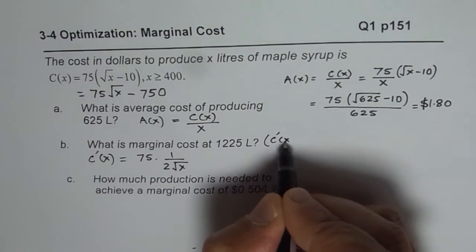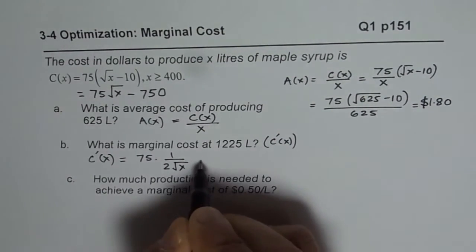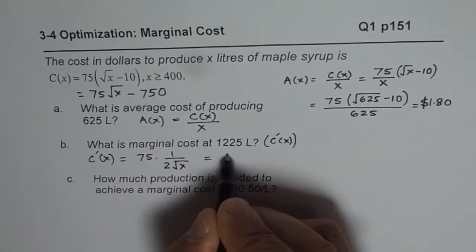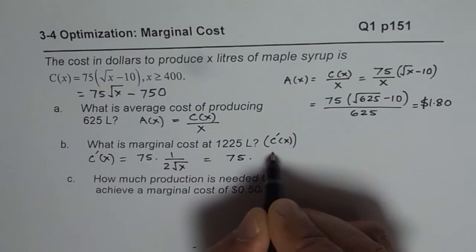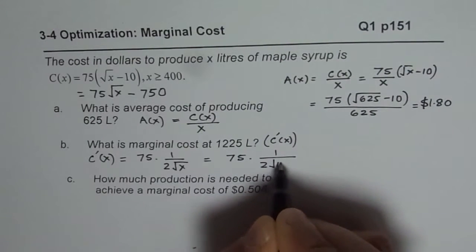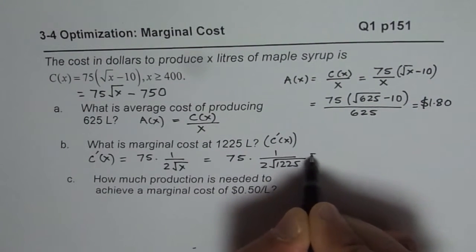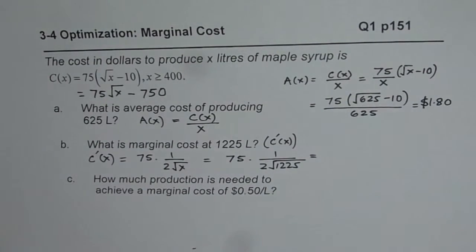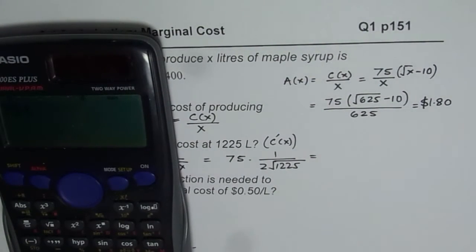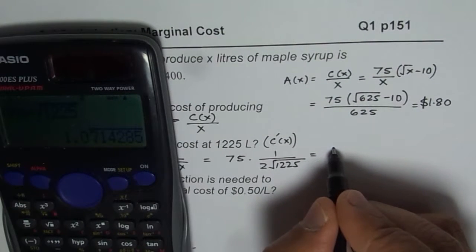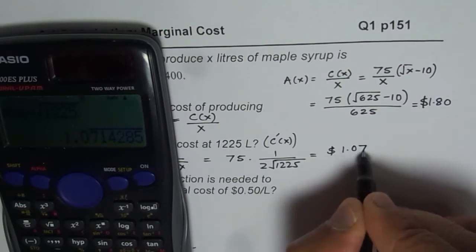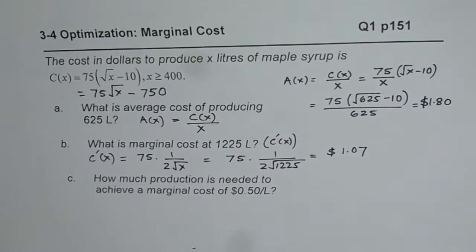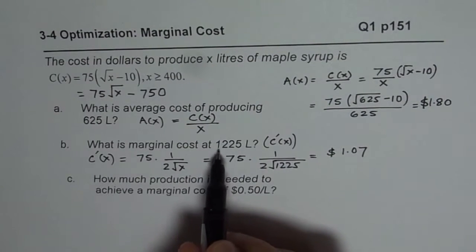C prime of x is the marginal cost. Now substitute x equals 1225: we have 75 divided by 2 times the square root of 1225. Using a calculator: 75 divided by 2, divided by the square root of 1225, gives 15 over 14, which is approximately $1.07. So the marginal cost at 1225 liters is $1.07.